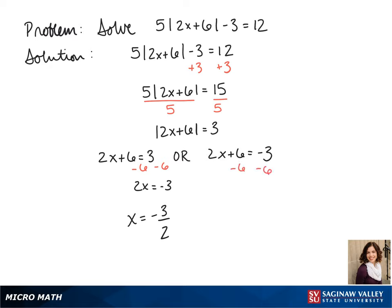Again, we subtract 6 from both sides, and we get 2x equals negative 9. We divide both sides by 2, and we get x equals negative 9 halves.